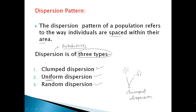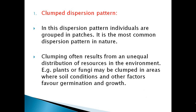Clumped dispersion is the most common pattern found in ecology or habitat. In this dispersion pattern, individuals are grouped in patches. Clumping results from an unequal distribution of resources in the environment. For example, plants and fungi may be clumped in areas where soil conditions and other factors favor germination and growth.